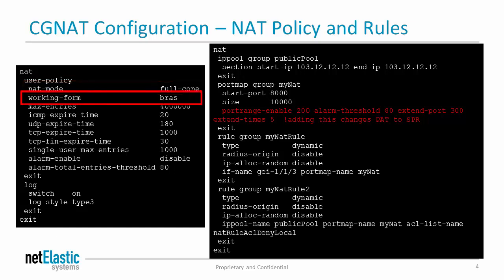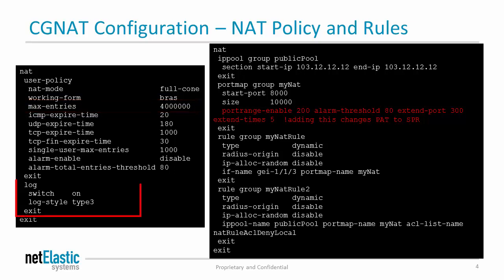The working form can be either BRAS or standalone. If you are setting the BNG as a subscriber management platform in conjunction with CGNet, you should set this to BRAS. If you are setting the BNG as a standalone CGNet router without subscriber management, set this to standalone. Max Entrance sets the maximum number of CGNet sessions — make sure to set this value to the licensed number of CGNet sessions. The log section allows you to set NAT logging on or off and specify the log style.